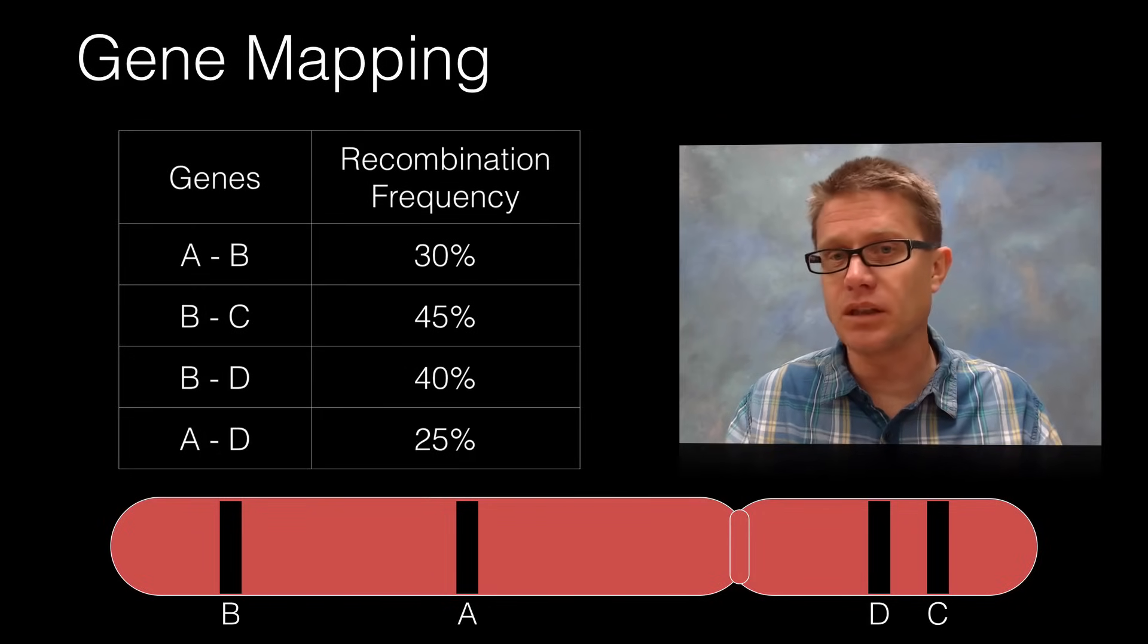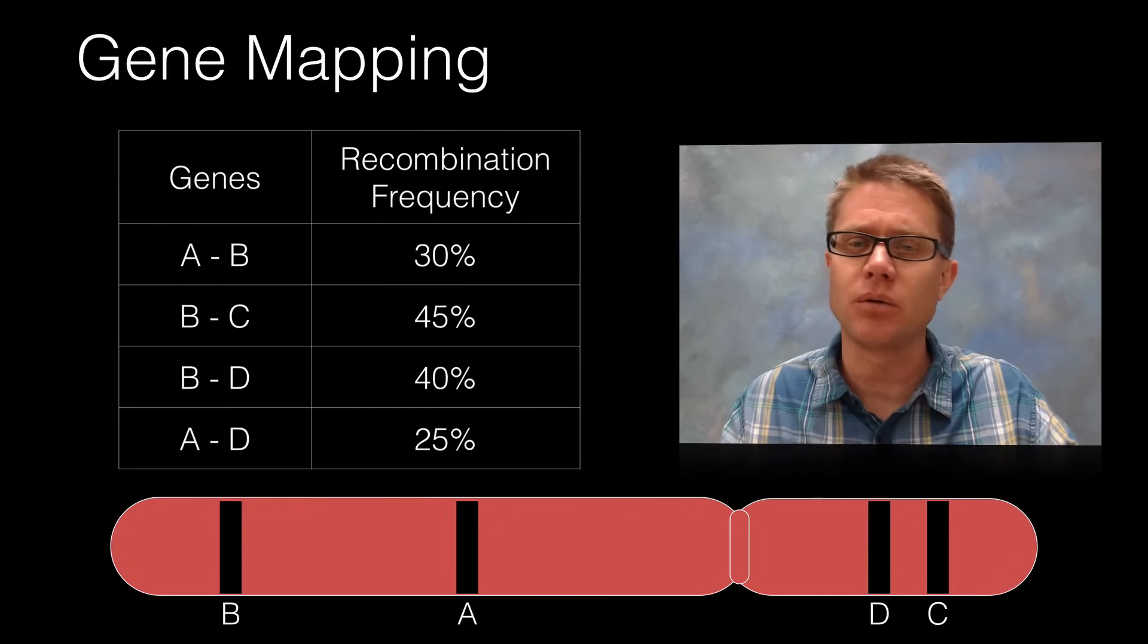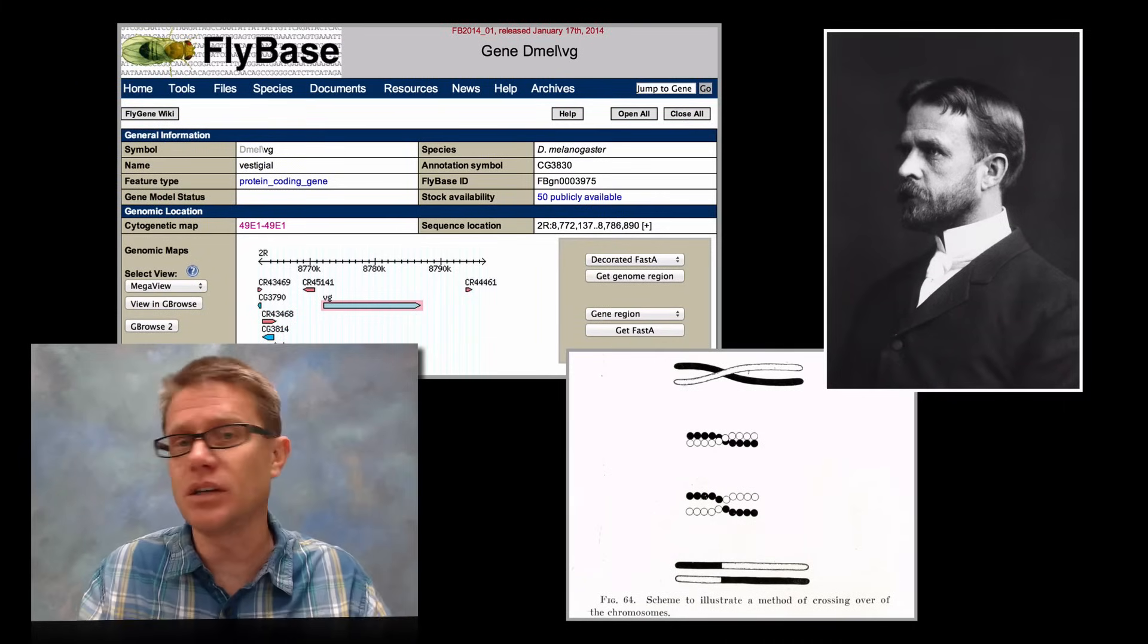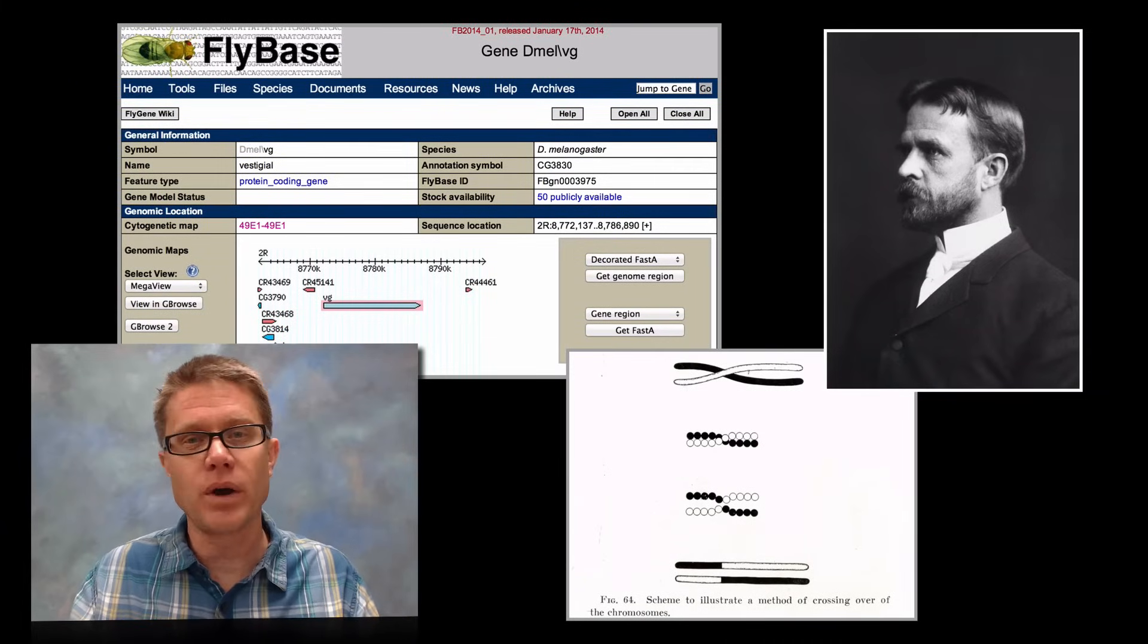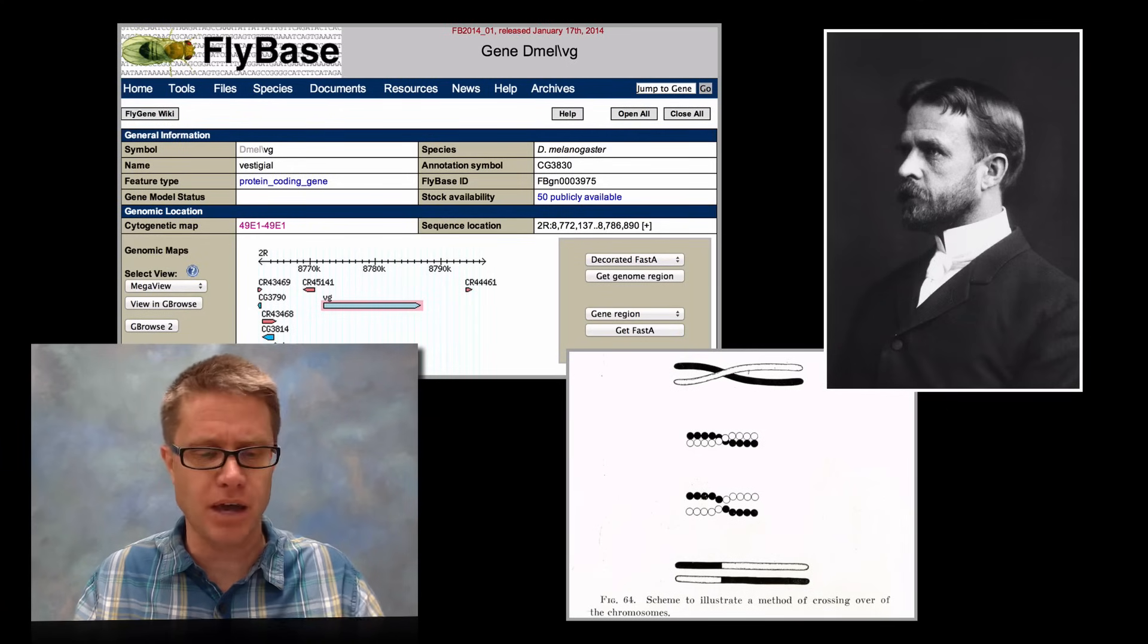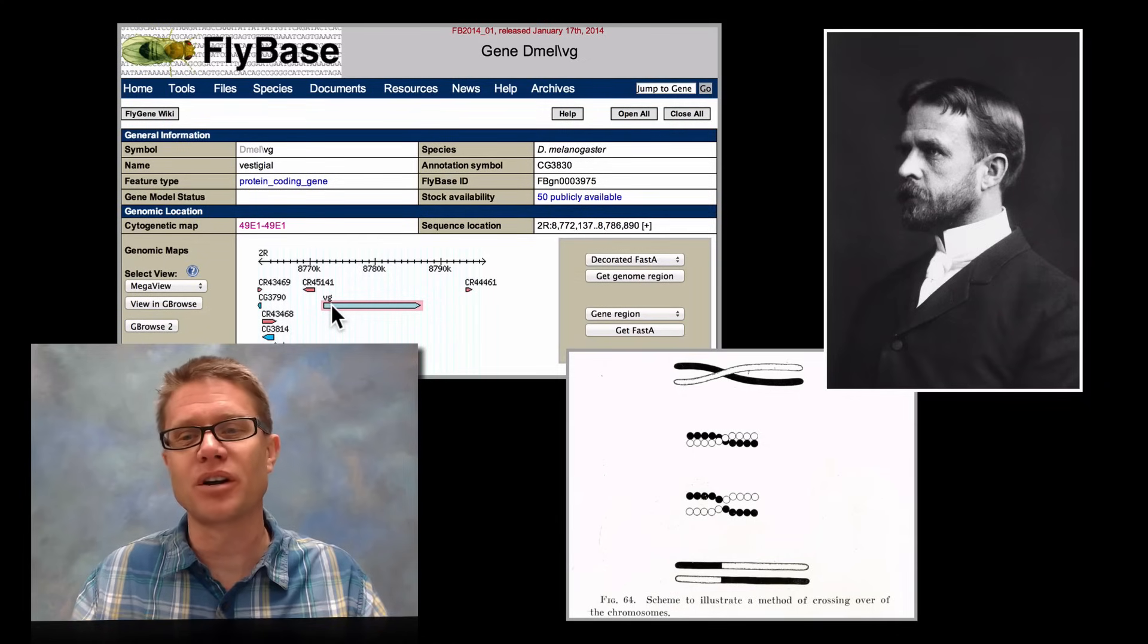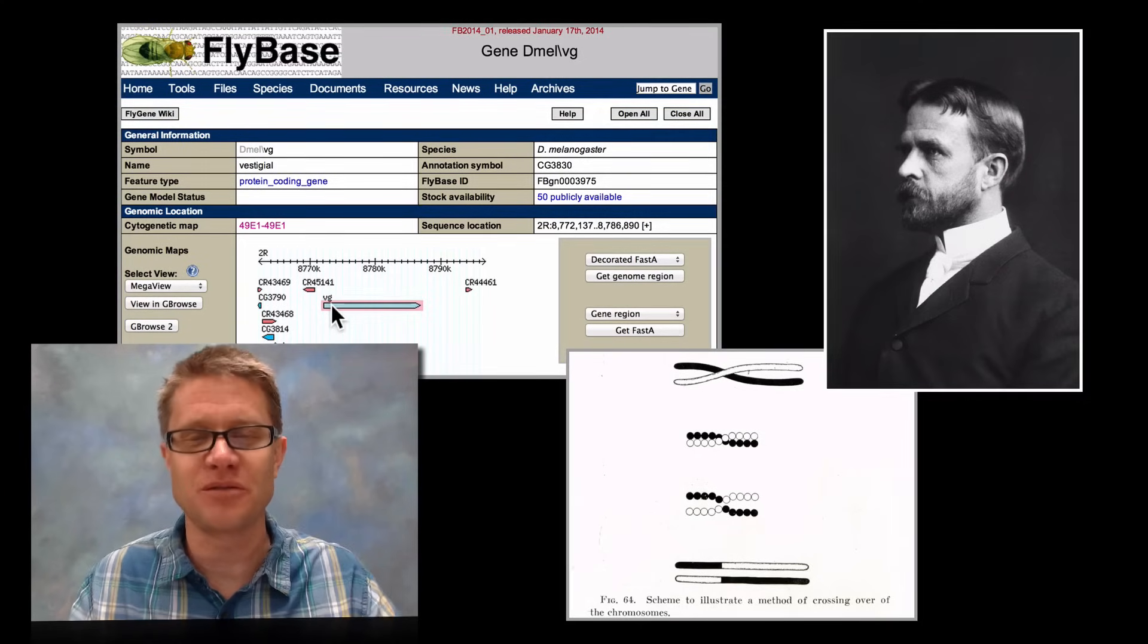Sturtevant and Morgan did that over years and they were able to map out where the genes are found on the chromosomes. Now we don't do it this way anymore. What do we do today? We simply sequence the DNA. Once we sequence the DNA we can figure out where the genes are. But the cool thing is that as we compare that, you could go right here to the fly base. I was looking up the vestigial gene, we know exactly where it is, but that maps up perfectly with the work of Morgan and Sturtevant. And so that's genetic recombination, it allows us to create gene maps. And I hope that was helpful.